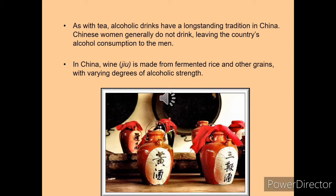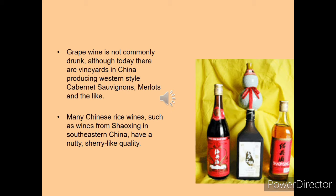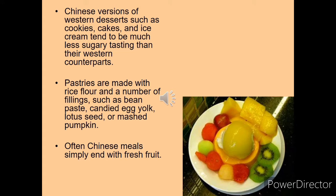Along with tea, alcoholic drinks are also part of Chinese tradition. Chinese women generally avoid alcoholic drinks. Alcohol is generally consumed by males, and wine in China is made from fermented rice and other grains with different alcoholic strengths. Chinese people generally don't drink wine too much, although they have vineyards in China. Their wines are similar to western countries, and many Chinese rice wines such as wine from Shaoxing in Southeast China have a nutty, sherry-like quality. When it comes to desserts, Chinese people are not that fond of them.